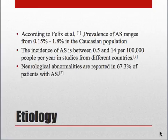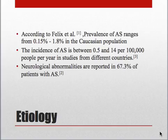According to Felix et al., prevalence of AS ranges from 0.15% to 1.8% in the Caucasian population. The incidence of AS is between 0.5 and 14 per 100,000 people per year in studies from different countries. Neurological abnormalities are reported in 67.3% of patients with AS.